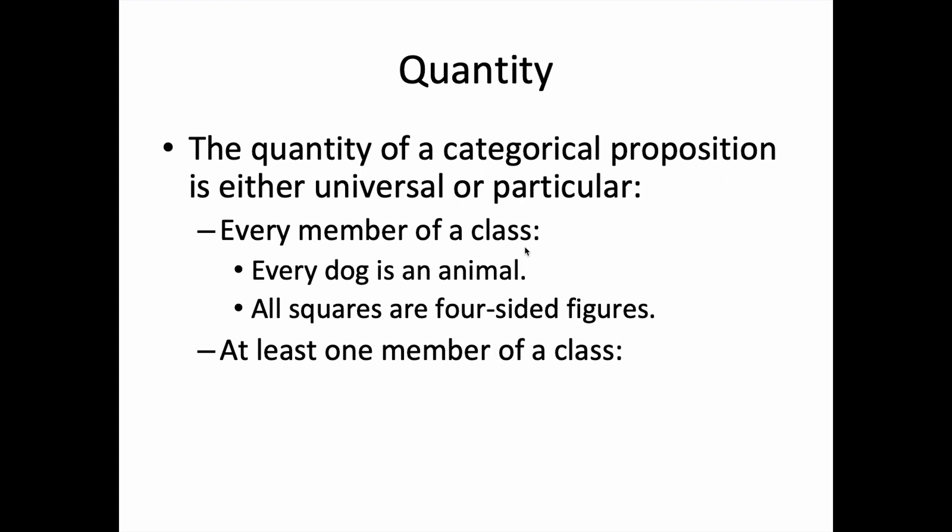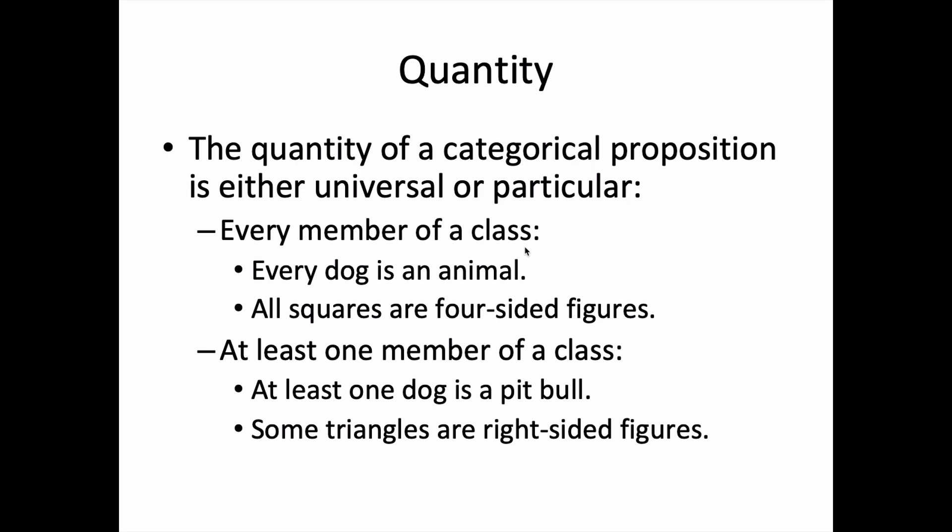A particular claim refers to there being at least one member of a subject class that is or is not a member of the predicate class. The particular claim reflects fewer than the entirety of a class, but it's not explicitly asserted how many we're talking about. For example: 'at least one dog is a pit bull' or 'some triangles are right-sided figures.' So the quantity of a claim involves how many of the subject class we're talking about.